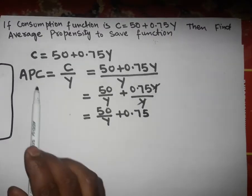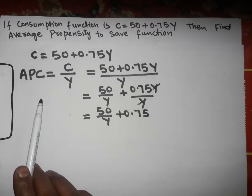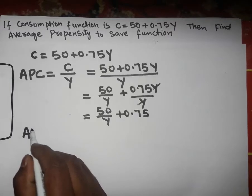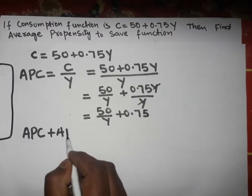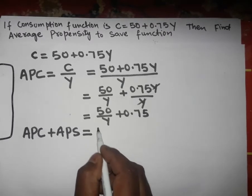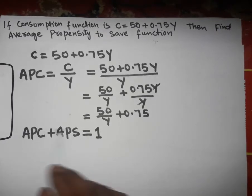Now, the relationship between average propensity to consume and average propensity to save is: APC plus APS equals 1. This means income is either consumed or saved.